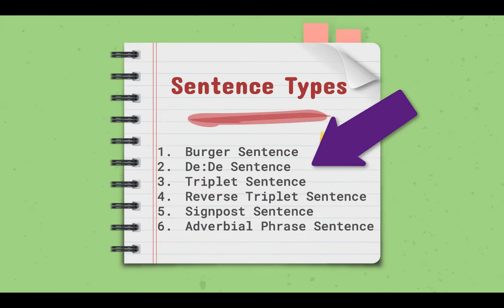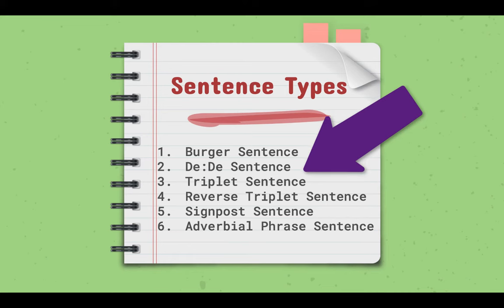The different kinds of sentences we're going to be looking at in today's video are: number one, the burger sentence; number two, the DD sentence; number three, the triplet sentence; number four, the reverse triplet sentence; number five, the signpost sentence; and number six, the adverbial phrase sentence.